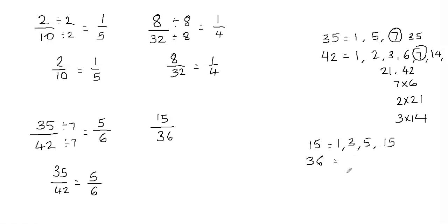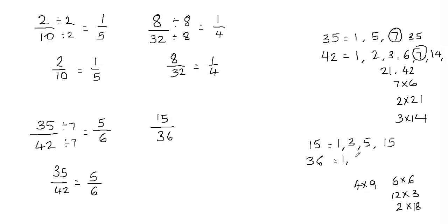Now let's write down the factors of 36. We're going to think of what two factors multiply to give us 36. 6 times 6 is 36. 12 times 3 is 36. 2 times 18 is also 36 — since 36 is an even number it's divisible by 2. 4 times 9 is also 36. Writing the factors in order: 1, 2, 3, 4, 6, 9, 12, 18, and 36.